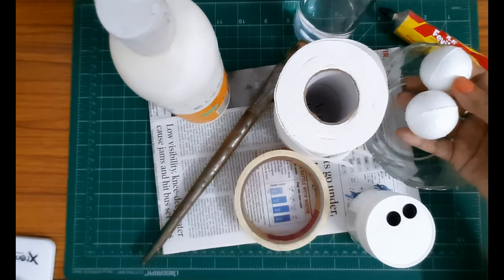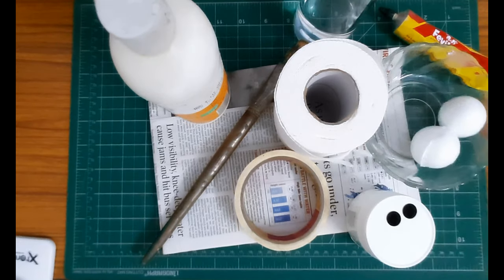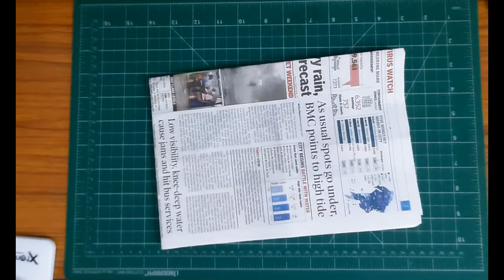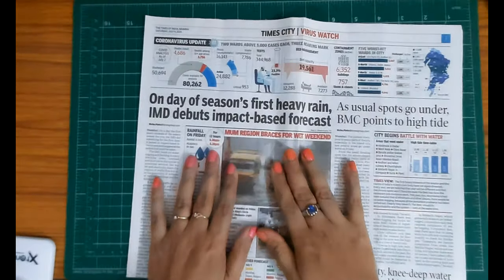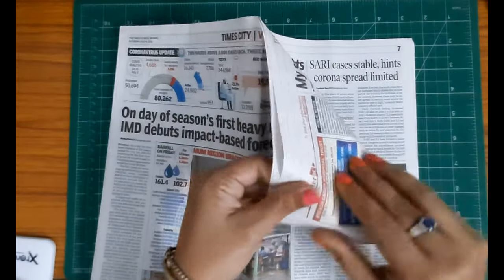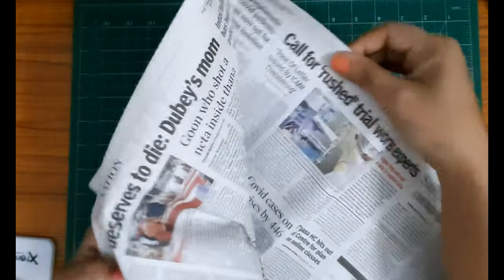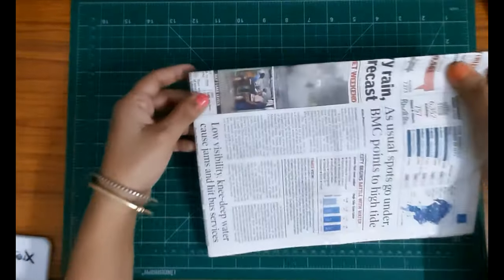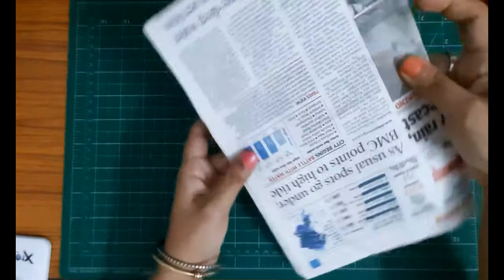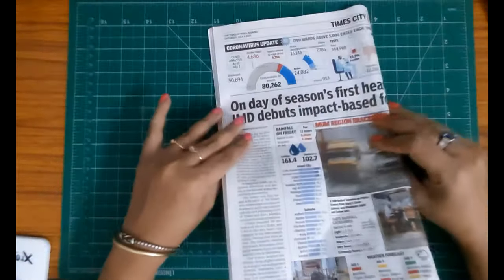You'll also need two thermocol balls or googly eyes or a table tennis ball. What you need to do first is take two sheets of newspaper. Fold them into half, then into another half, and then into another half like this.